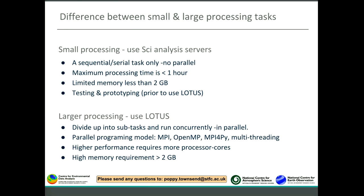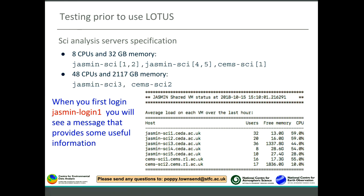Moving to the second type — large processing: we advise using LOTUS if your large tasks can be divided into sub-tasks that can run concurrently and efficiently in parallel for speed-up. Also use LOTUS if you are using a parallel programming model like MPI, or message passing interface for Python, or any multi-threaded application that needs more compute power. Any high memory requirements for your job should also be run on LOTUS, because using a shared machine with other users can affect those other users.